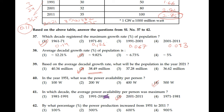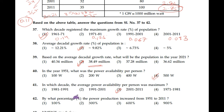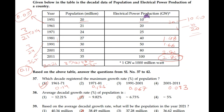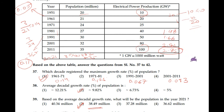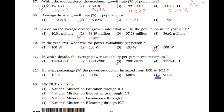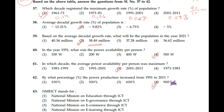Question number 42: By what percentage did power production increase from 1951 to 2011? In 1951 it was 10, in 2011 it was 100. The percentage increment is (100 minus 10) divided by 10, multiplied by 100%, which is 90 divided by 10 into 100% = 900%. Correct option is 4.